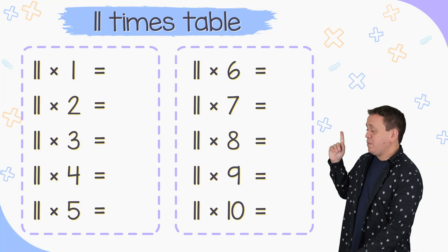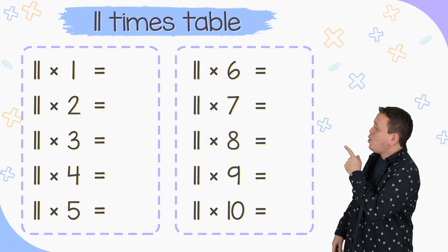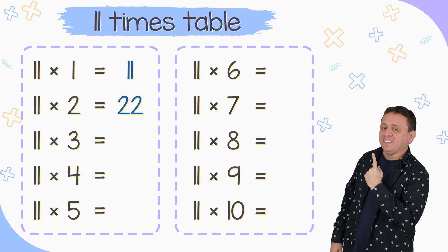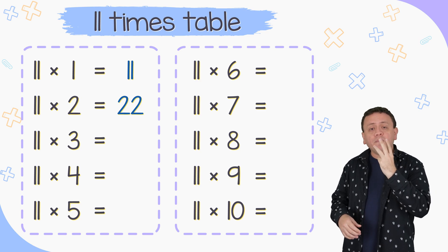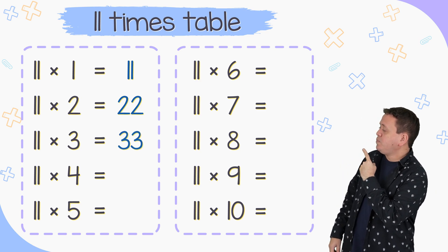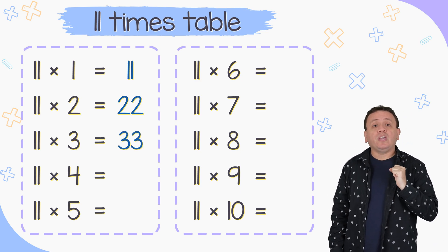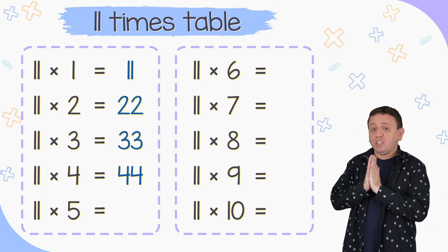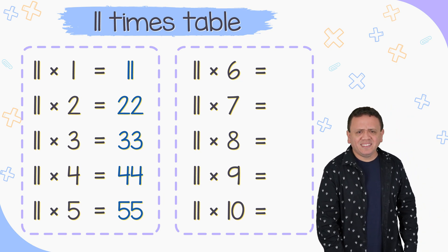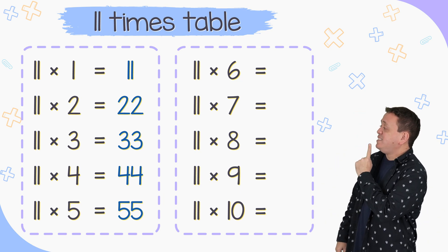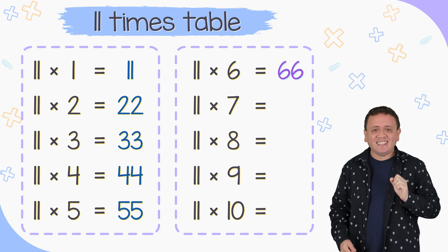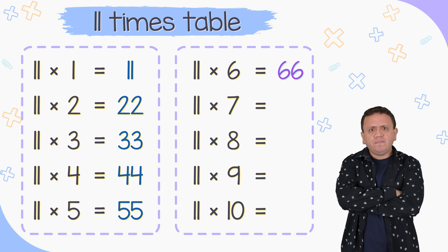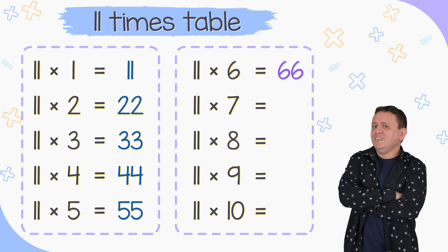And now the 11 times table. Let's start with 11 times 1 equals 11. 11 times 2 is equal to 22. 11 times 3 is equal to 33. 11 times 4 equals 44. 11 times 5 is equal to 55. 11 times 6 is equal to 66. And 11 times 7 is equal to — what is 11 times 7? Help me please. It's equal to 77.